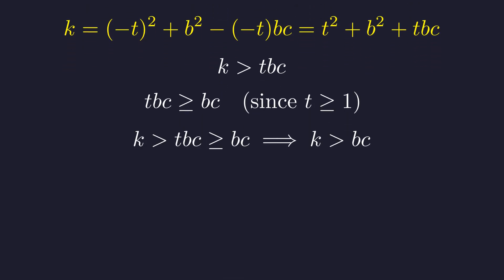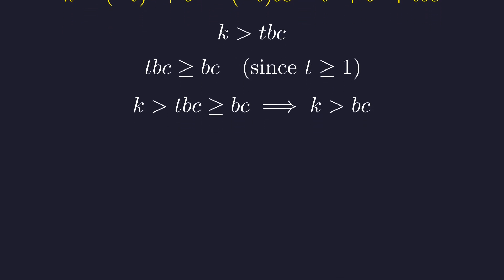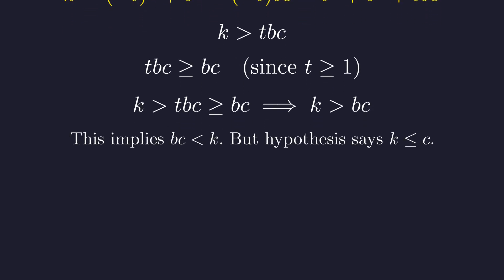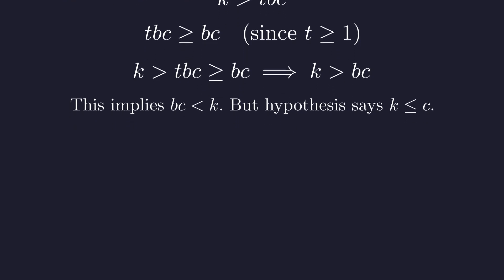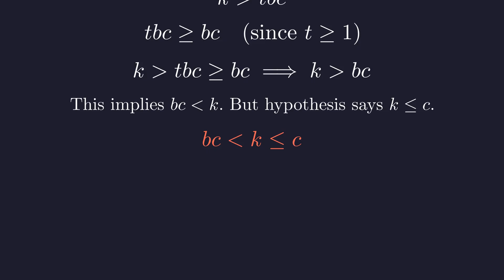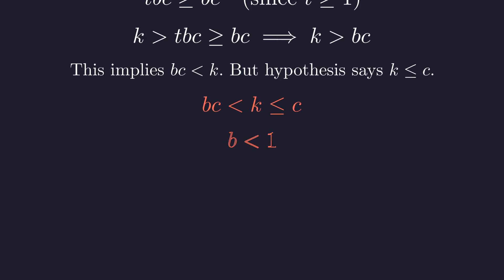Chaining these inequalities together, we prove that k must be strictly greater than b times c. Now we have a problem. We just proved bc is less than k, but our hypothesis states that k is at most c. This gives us the absurd inequality that bc is strictly less than c. Since c is a positive integer, we can divide both sides by c without changing the inequality. This leads to the conclusion that b is less than 1, which is impossible for a positive integer. So a prime cannot be negative.